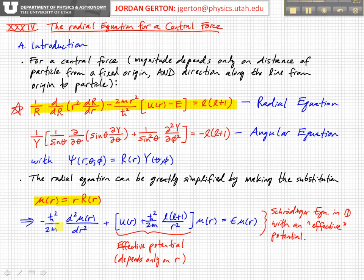Minus h bar squared over 2m, d squared mu of r dr squared, plus u of r plus h bar squared over 2m times l times l plus 1 over r squared times mu of r equals e times mu of r. If you look at this, it looks basically like the Schrodinger equation in one dimension with an effective potential.